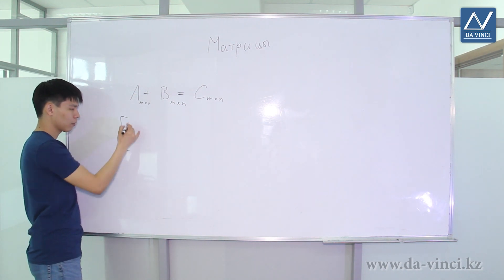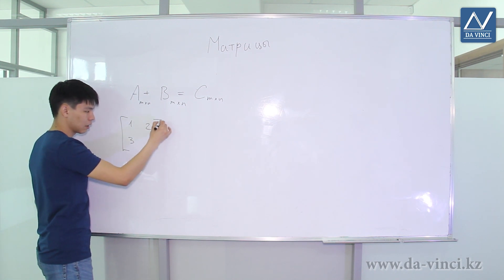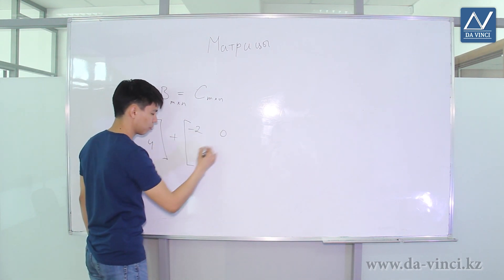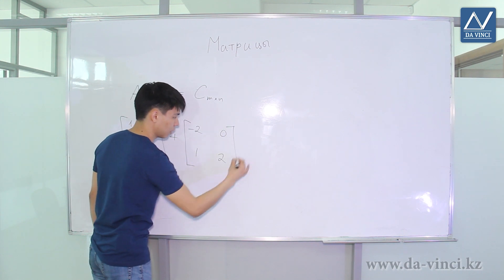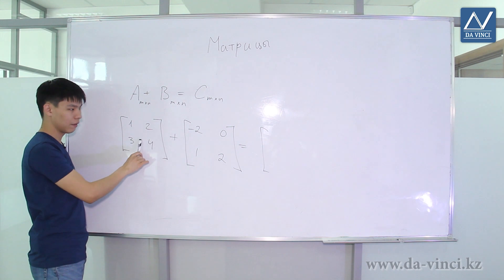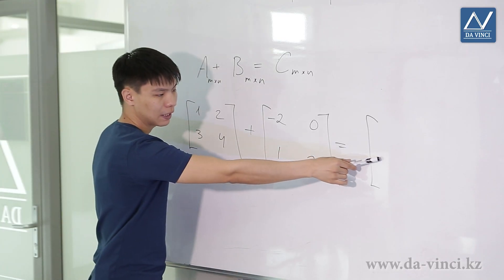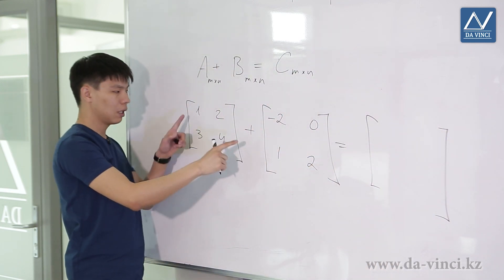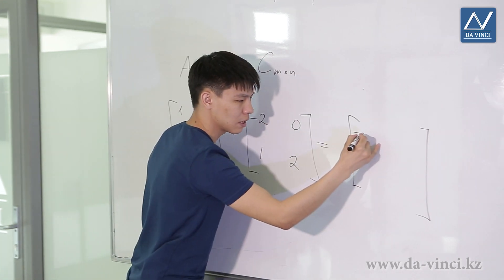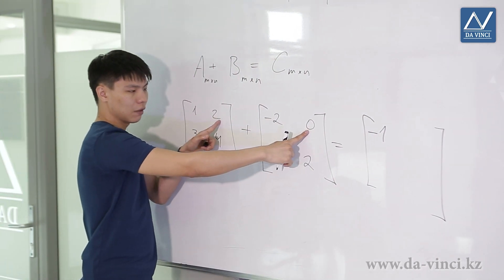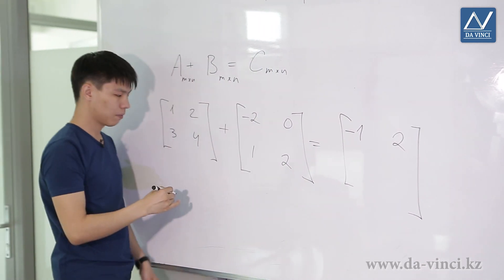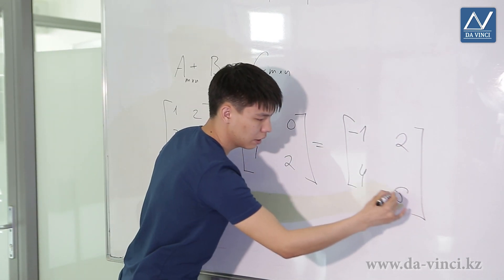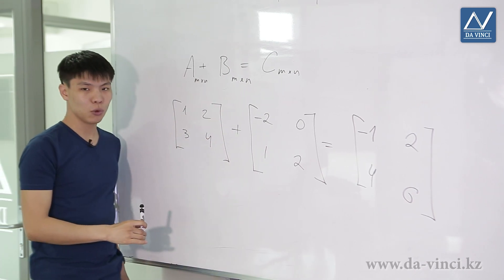Let's consider an example. We have a 2 by 2 matrix A and add a matrix of the same size. We have two matrices of the same size, so we can add them. The result is a matrix of the same size, and its elements are found by adding the corresponding elements: 1 plus minus 2 equals minus 1; 2 plus 0 equals 2; 3 plus 1 equals 4; 4 plus 2 equals 6. Addition of matrices occurs element by element.